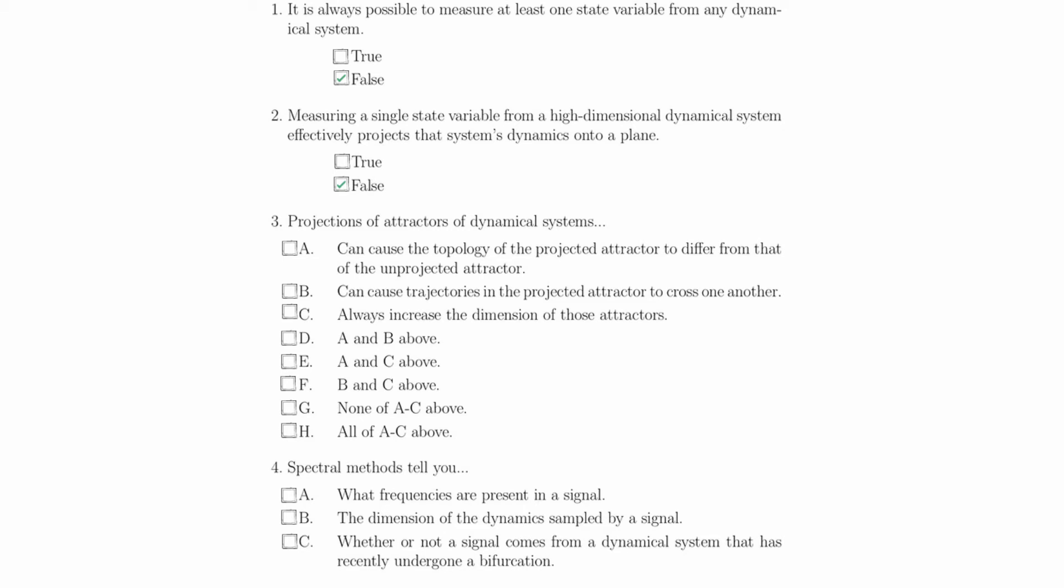For Part B, projections of attractors of dynamical systems can cause trajectories in the projected attractor to cross one another. And this is absolutely true, as we just discussed in Part A.